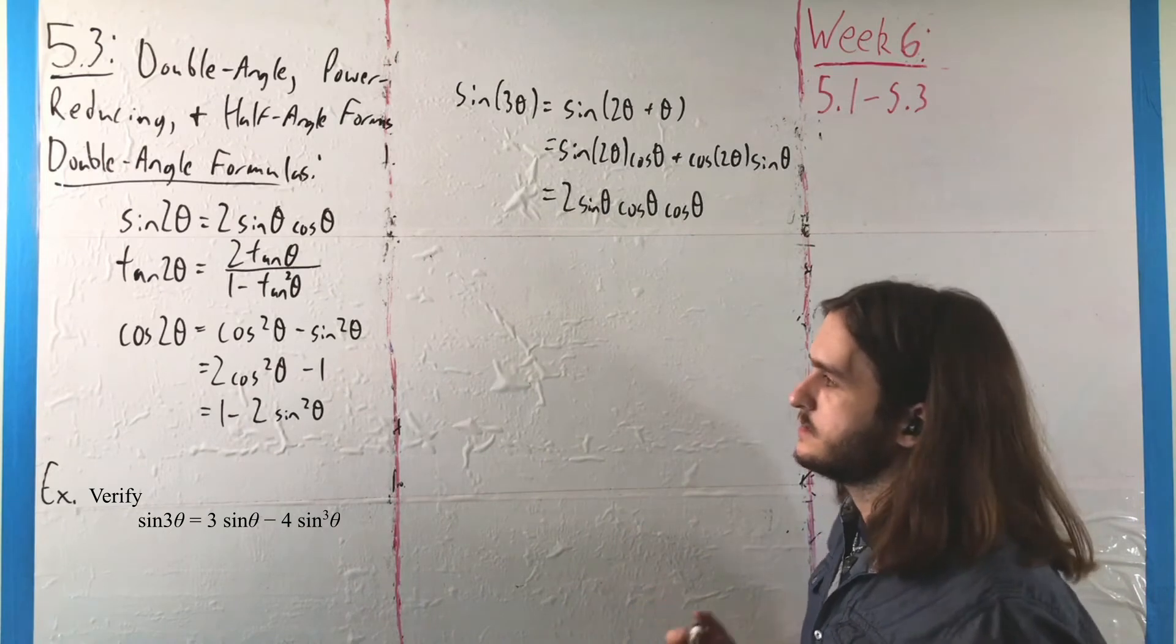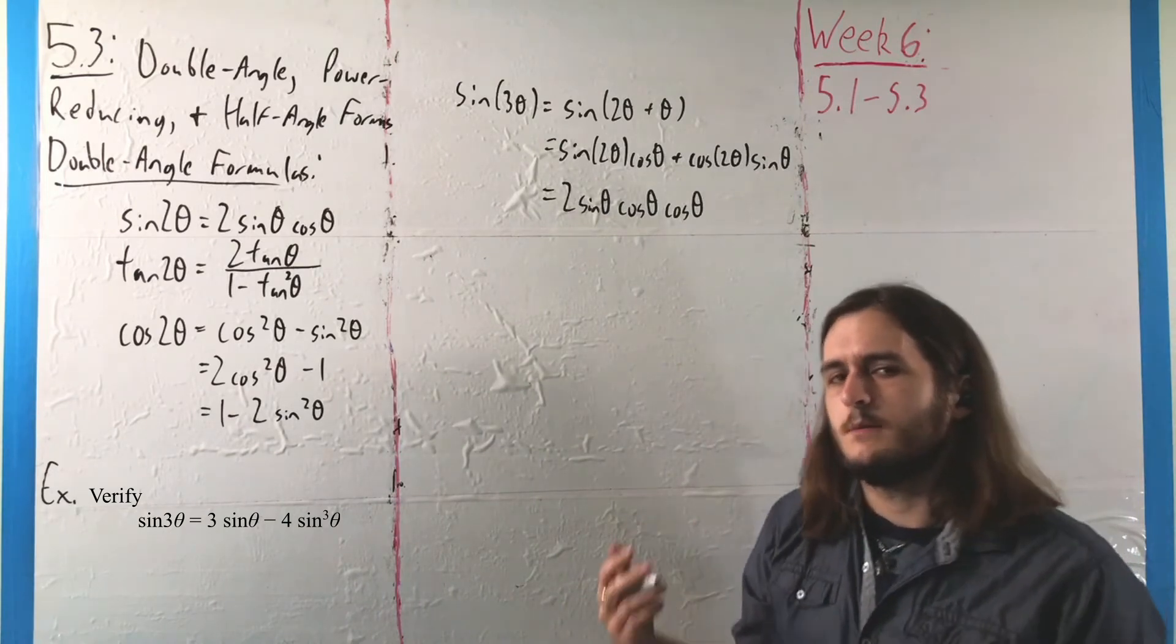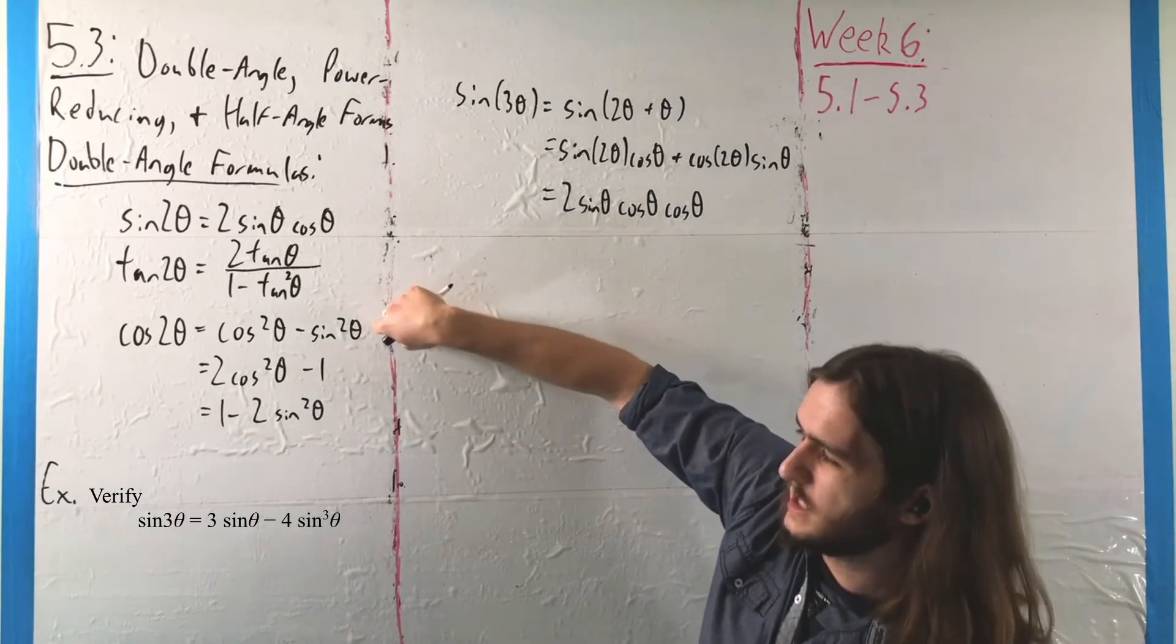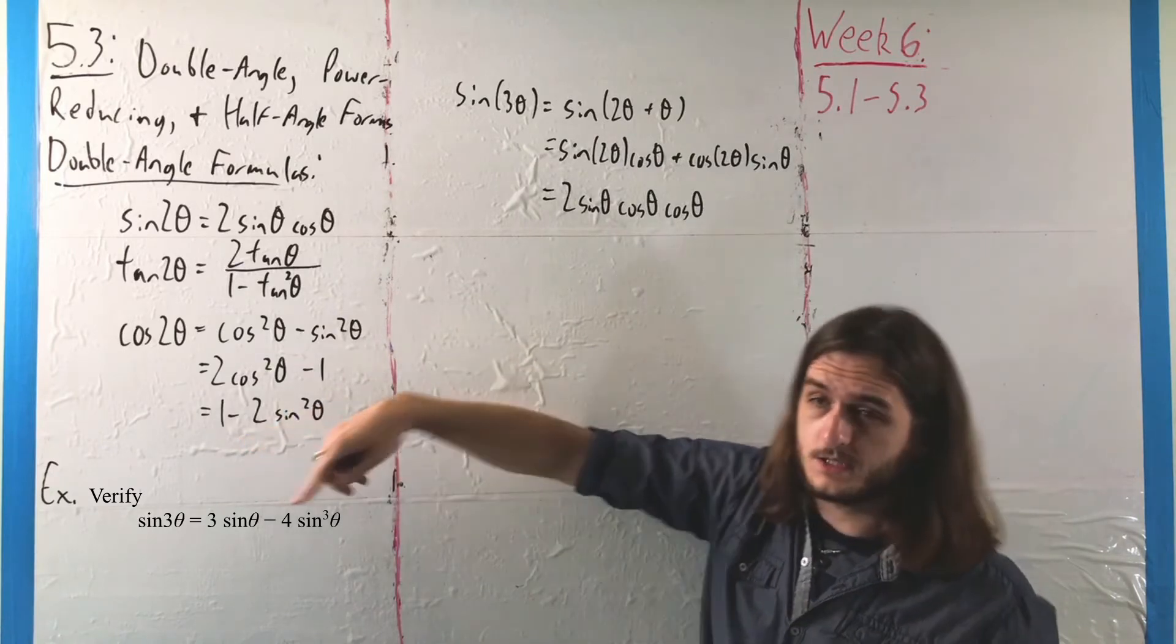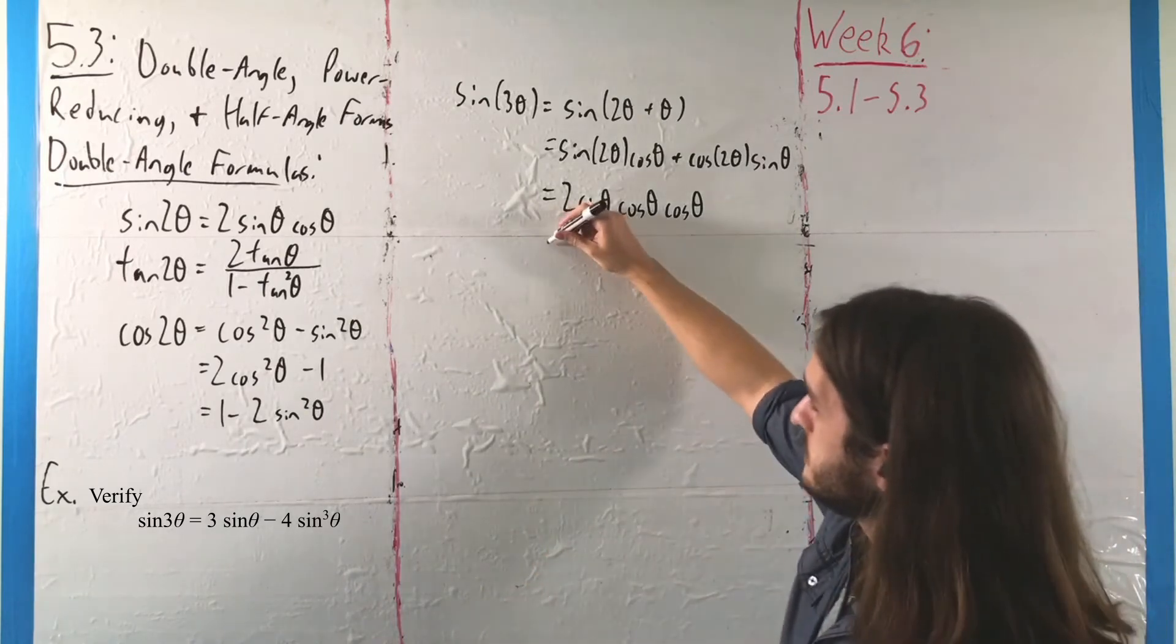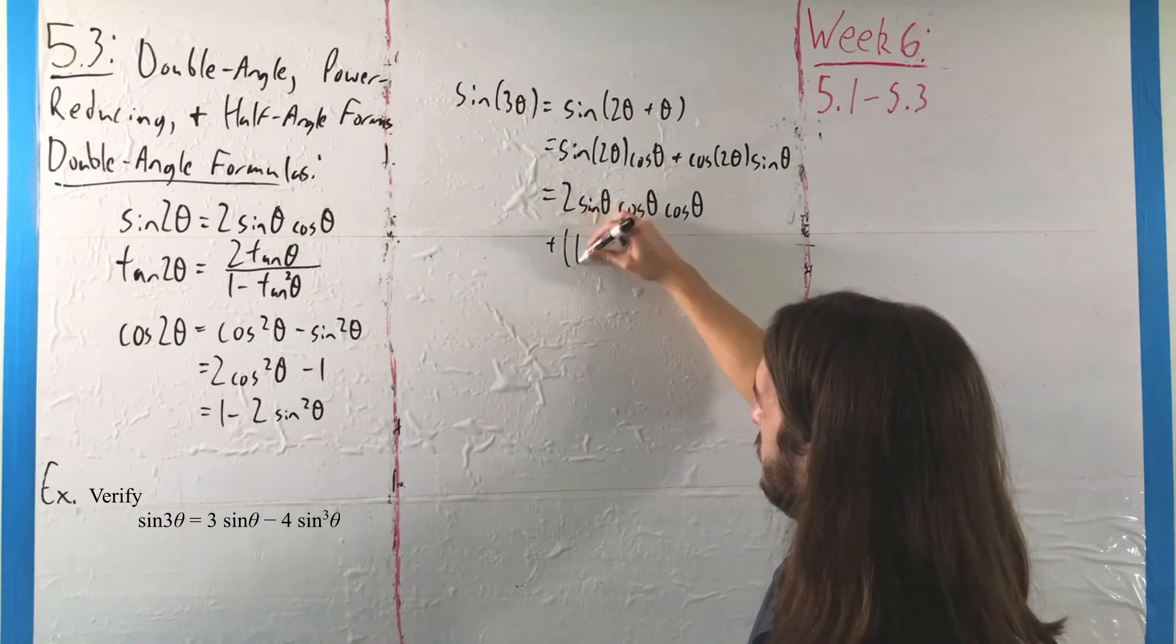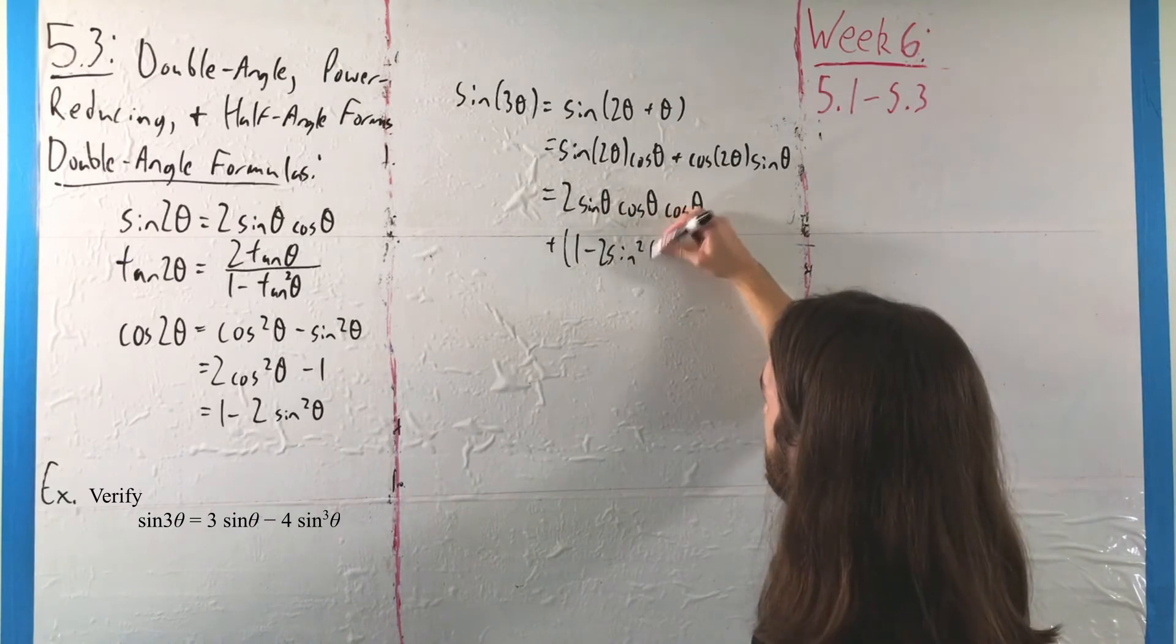Generally when we're talking about these substitutions, we want the most amount of things possible to match, and this might not be the worst candidate in the world, but down here, all we're going to have after multiplying this through is more sines, and we like to keep things as simple and consistent as possible. So I'm going to turn that cosine of 2 theta into 1 minus 2 sine squared of theta times